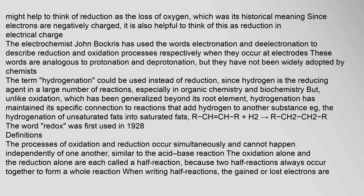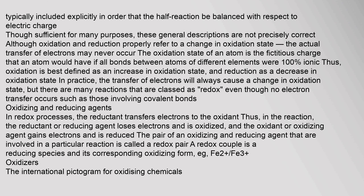The processes of oxidation and reduction occur simultaneously and cannot happen independently of one another, similar to the acid-base reaction. The oxidation alone and the reduction alone are each called a half-reaction, because two half-reactions always occur together to form a whole reaction. When writing half-reactions, the gained or lost electrons are typically included explicitly in order that the half-reaction be balanced with respect to electric charge. Although oxidation and reduction properly refer to a change in oxidation state, the actual transfer of electrons may never occur. The oxidation state of an atom is the fictitious charge that an atom would have if all bonds between atoms of different elements were 100% ionic. Thus, oxidation is best defined as an increase in oxidation state, and reduction as a decrease in oxidation state.